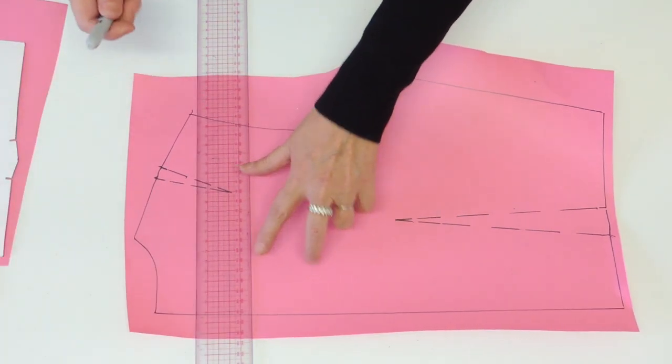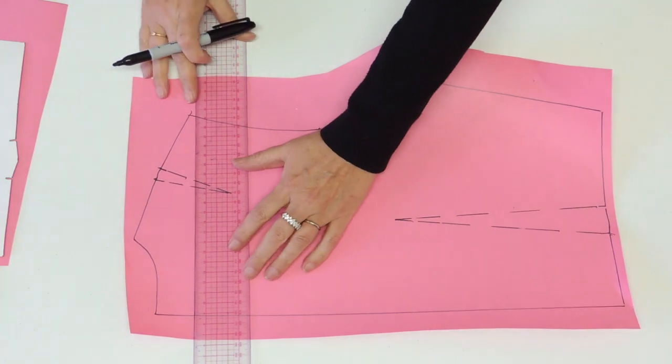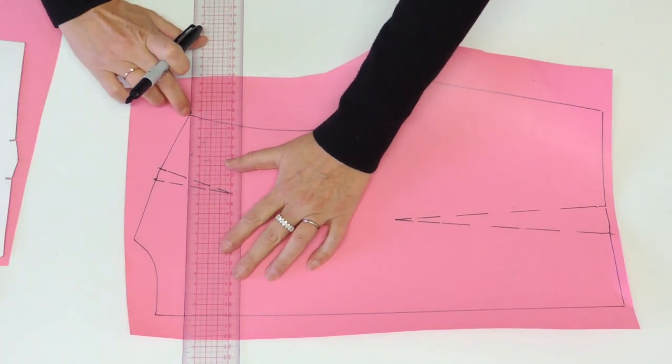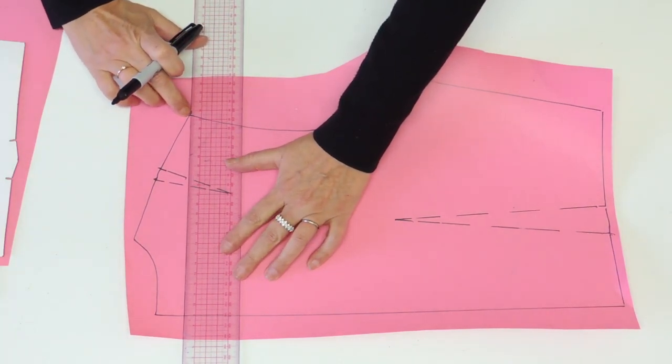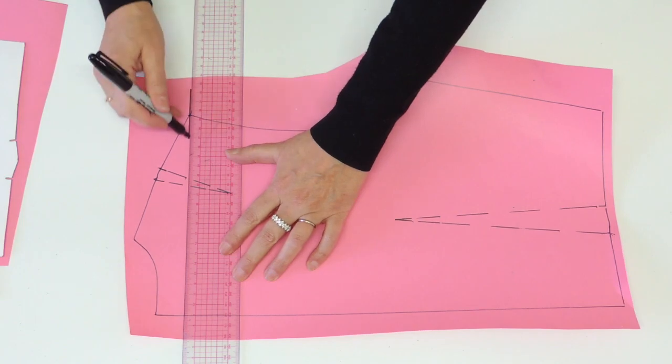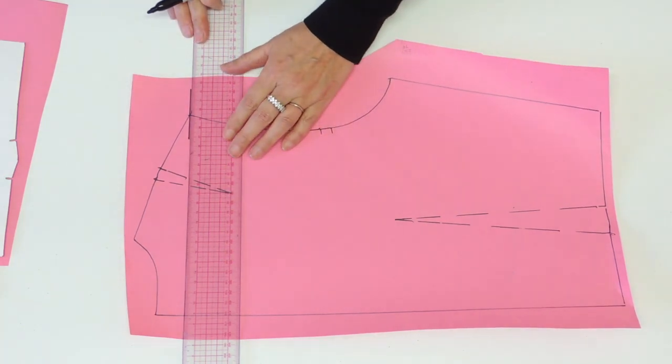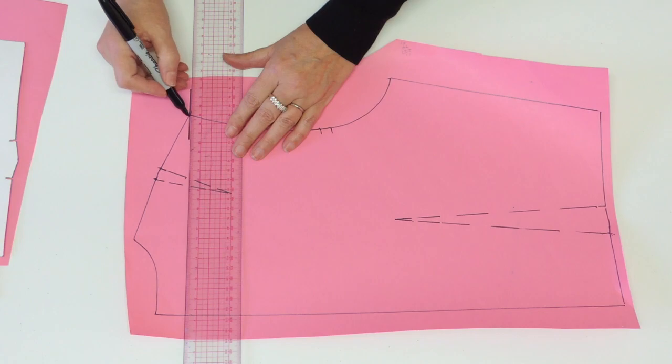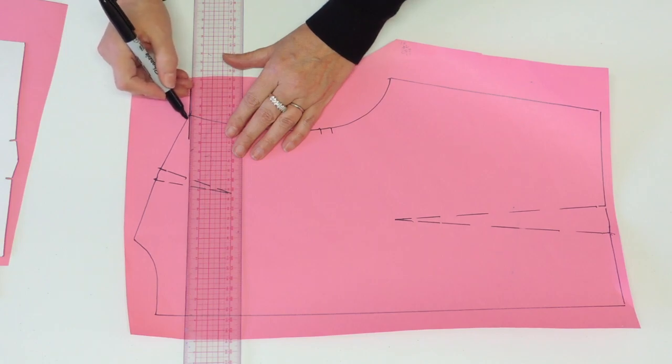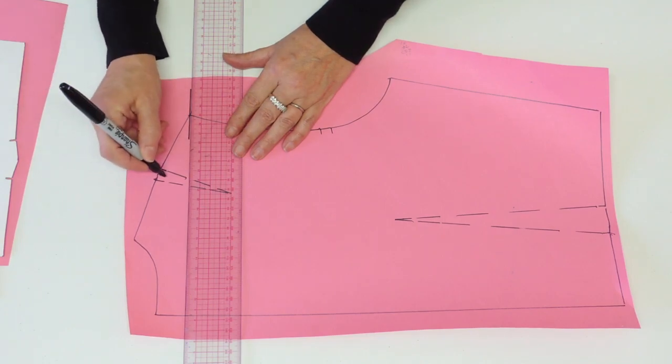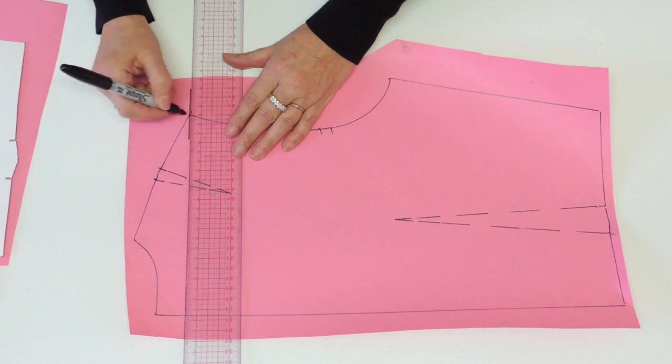We're going to eliminate the shoulder dart by removing it from the armhole or the shoulder and armhole point. First, you're going to trace a square line from center back touching the shoulder and armhole point. And on that line, you're going to remove the value of the dart, going towards center back. My center back dart was 1 cm.